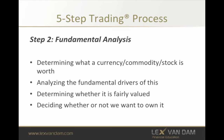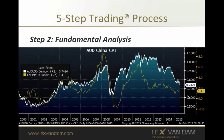What it comes down to at this stage is deciding whether something is fairly valued, over or undervalued, and based on that whether we want to own it. One ongoing example is a slowdown in China: the yellow line shows Chinese CPI — Chinese inflation — and its relationship to the Australian dollar. When the Chinese economy slows, demand for Australian commodities drops, so the currency also depreciates in value. You can see that relationship clearly.